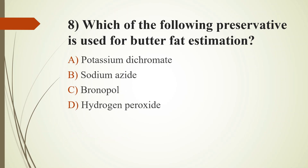Eighth question: Which preservative is used for butterfat estimation? Option A: Potassium dichromate; Option B: Sodium azide; Option C: Bronopol; Option D: Hydrogen peroxide. The answer is Option A: Potassium dichromate — 40% potassium dichromate is used here. The other options — sodium azide, bronopol, and hydrogen peroxide — are also used for milk analysis.